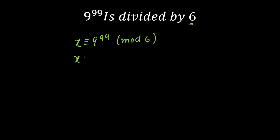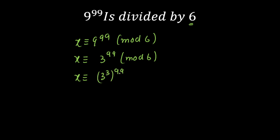I'm going to write this as x is congruent to 9 raised to the power 99, mod 6. Again dividing by 6, I can write x is congruent to 3 raised to the power 99, because when you divide 9 by 6 the remainder is 3, mod 6. Since 3 is less than 6, I have to make 3 raised to some power greater than 6 so that I can divide and reduce this number. I can write this as 3 raised to the power 3, whole raised to the power 33, mod 6. Opening this, 3 raised to the power 3 is 27, so x is congruent to 27 raised to the power 33, mod 6.